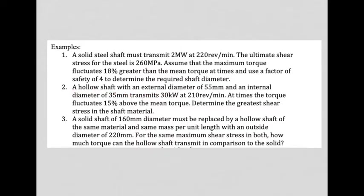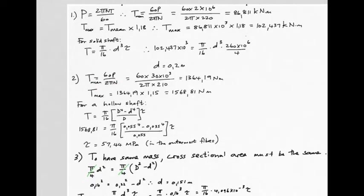Example 2 is the same but for a hollow shaft with external diameter 55 mm and internal diameter 35 mm, with a 15% torque fluctuation above mean. Working out the mean torque using T = 60P/2πN, adding 15% gives 1568 N·m. Using the hollow shaft formula and solving for stress, the outermost fibers of this shaft experience 57.44 megapascals.